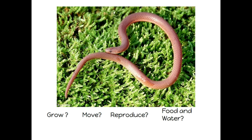I'm going to show you a couple pictures and I have the questions down below. These are the four things you want to think about when looking at the picture to decide whether it's a living thing. Our picture is a snake. Does the snake grow, move, reproduce, or lay eggs and have babies? Does it need food and water? It sure does — it does all those things. So that would be considered a living thing.